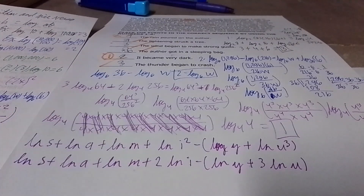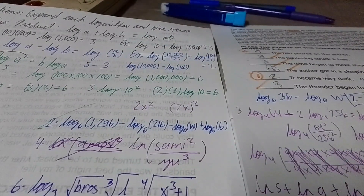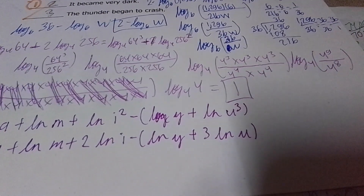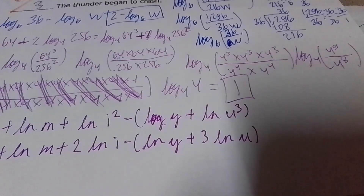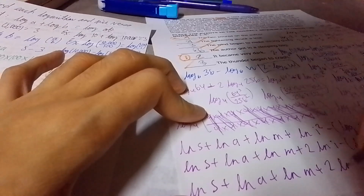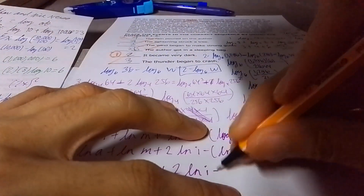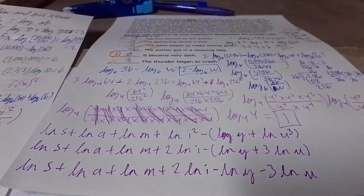So rewriting the full expansion: LN of S plus LN of A plus LN of M plus 2 times LN of I, then distributing the negative gives minus LN of Y minus 3 LN of U. That is your final expanded answer.